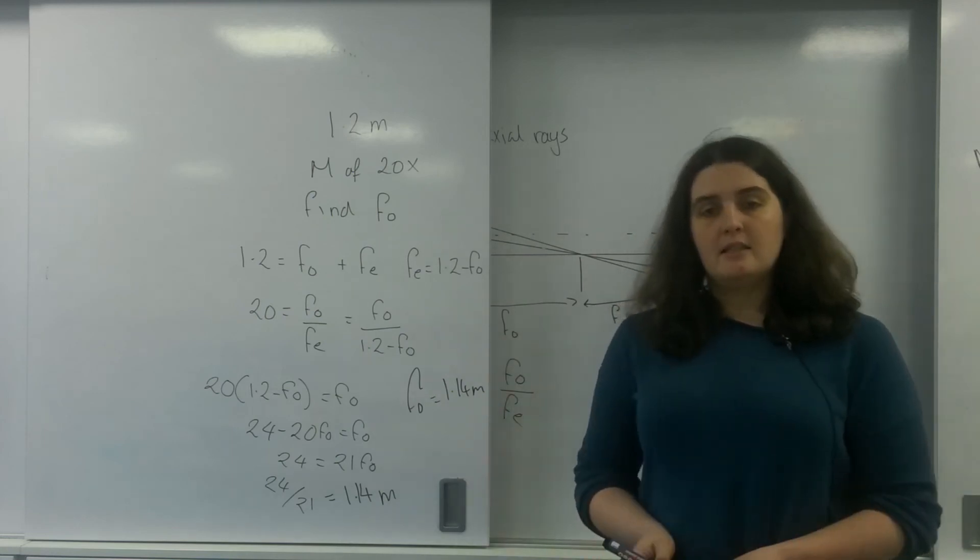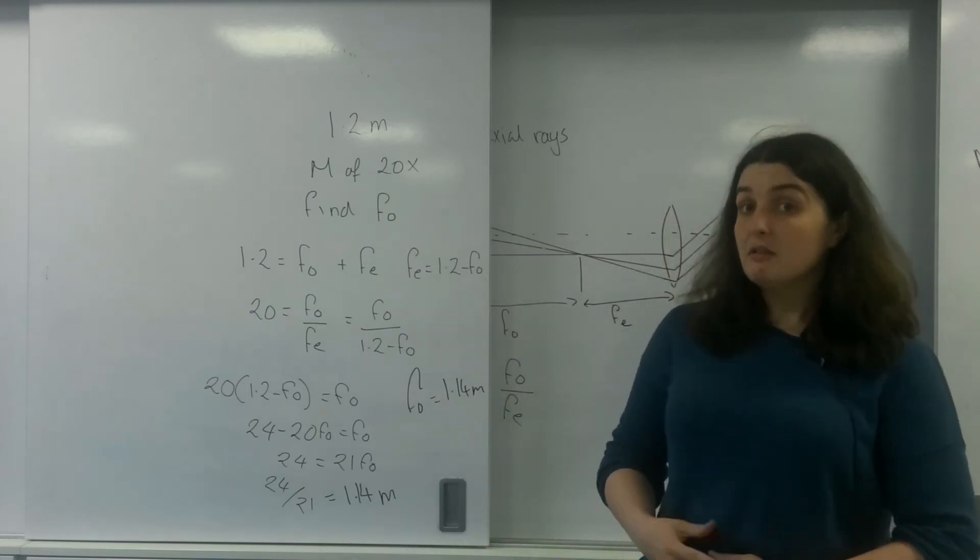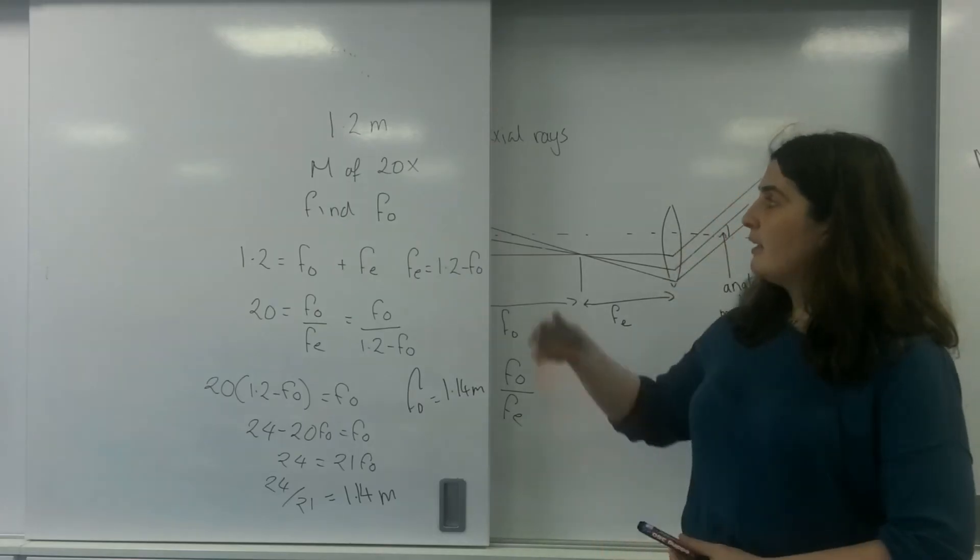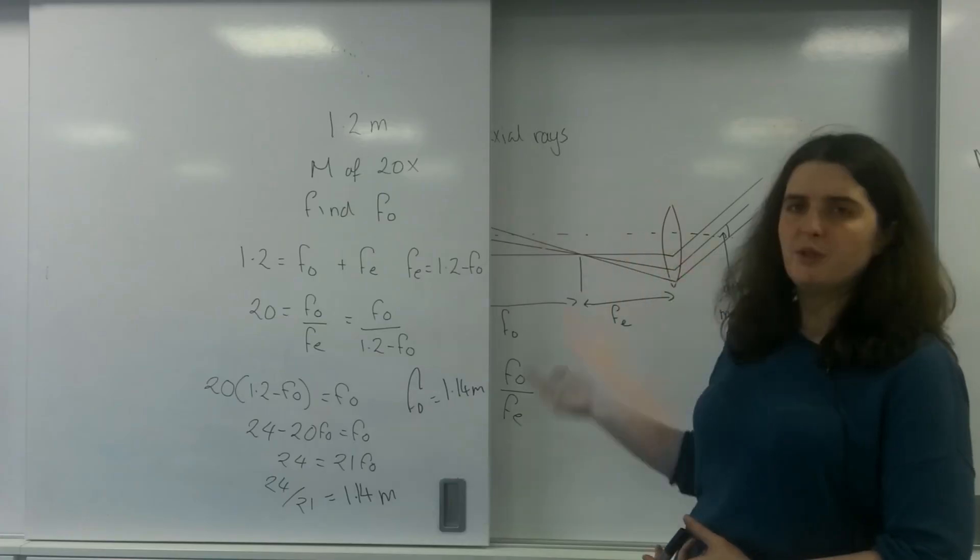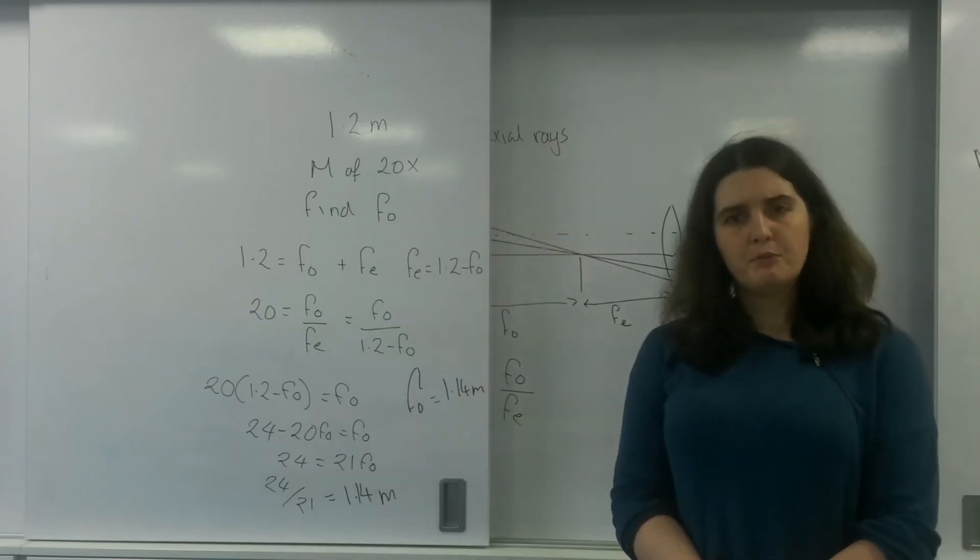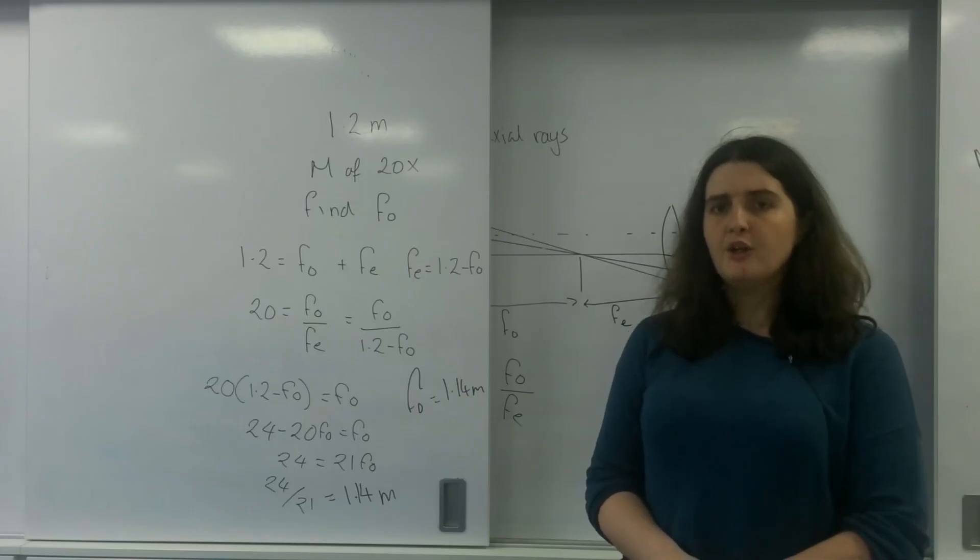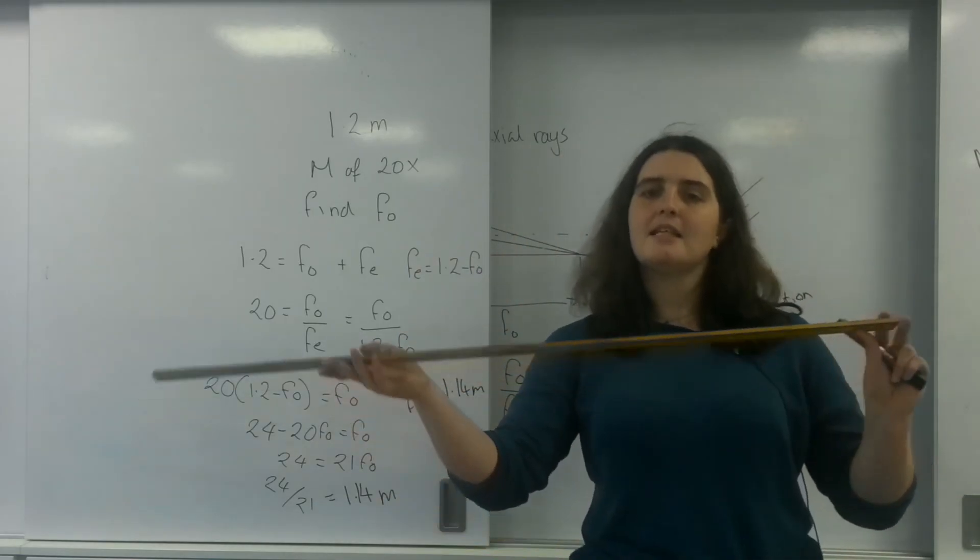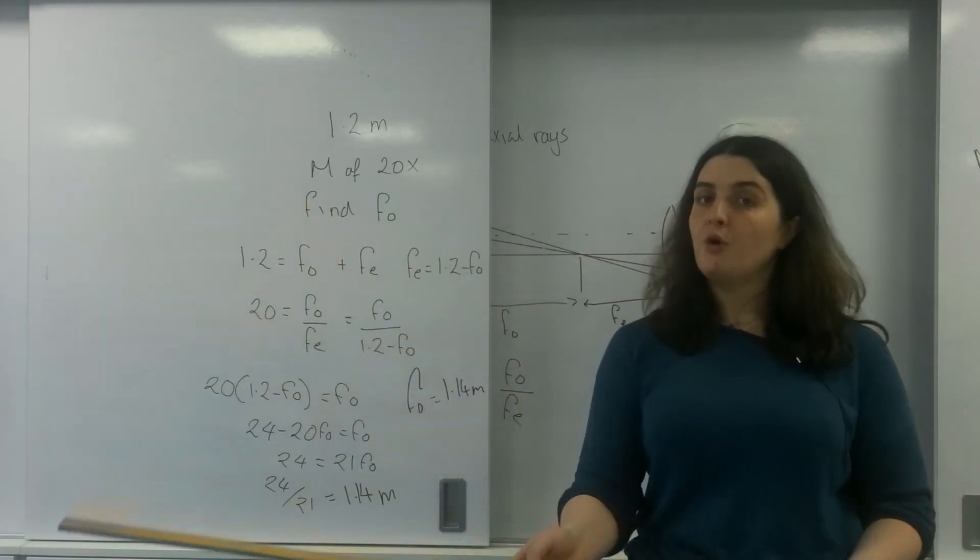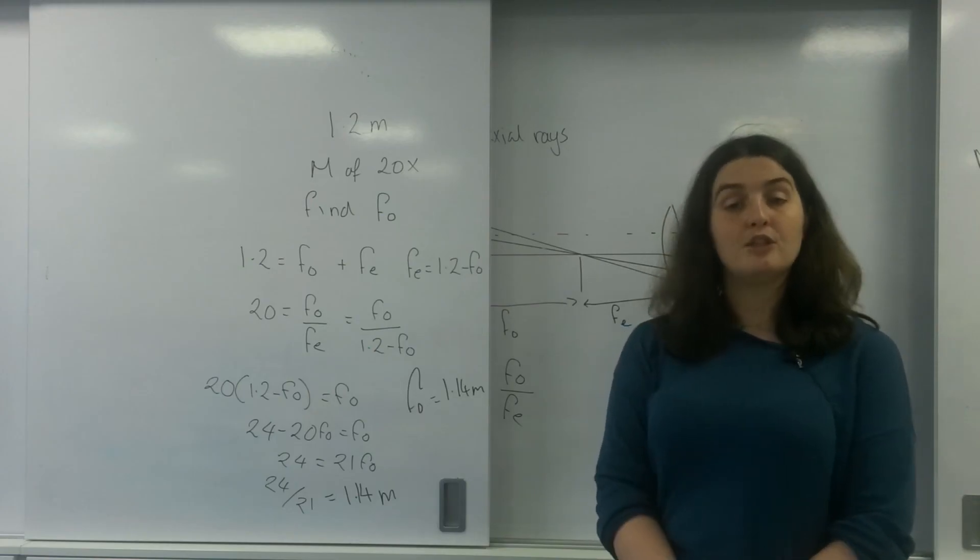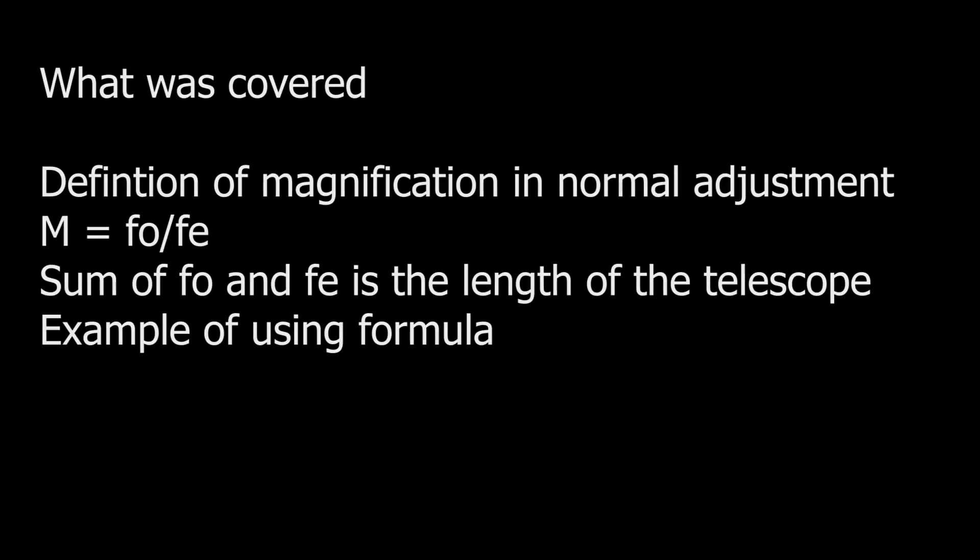So, that is the magnification of a telescope in the normal adjustment. And what I've shown you here is that, first of all, it's a very simple equation, but you can actually find out so much information about the focal length, knowing the fact that the length of the telescope is the sum of the two optical focal lengths. So, that there is magnification in the normal adjustment. Thank you.